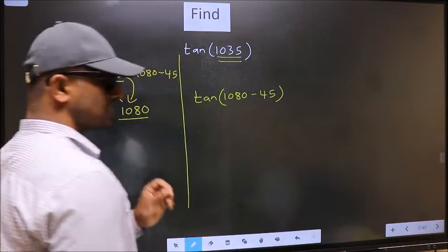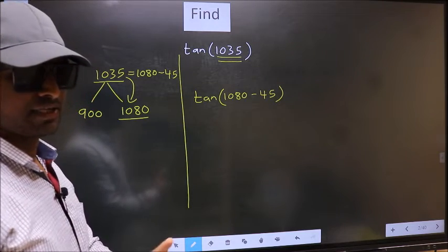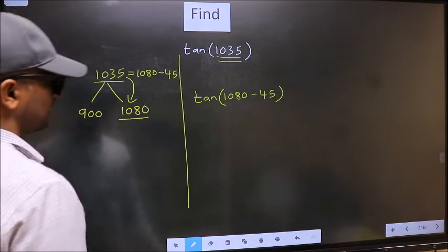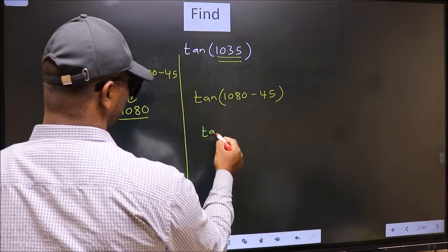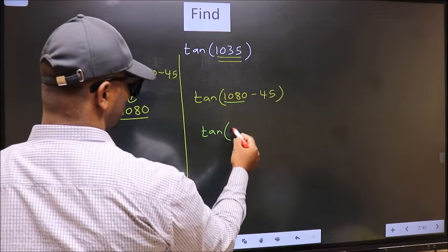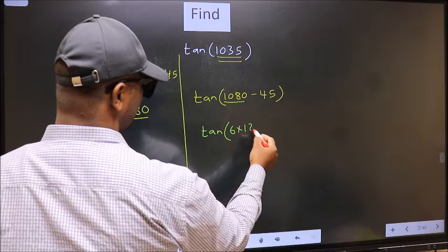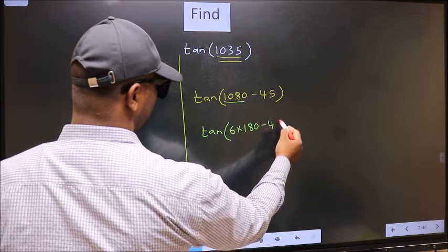This is your step 1. Next, tan. In place of this, now we should write 6 into 180 minus 45.